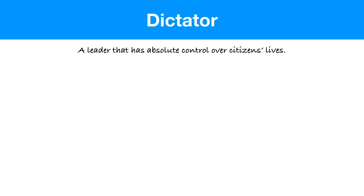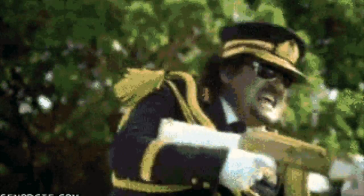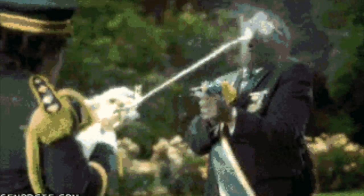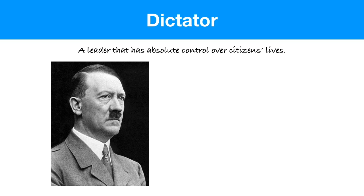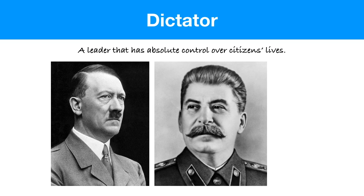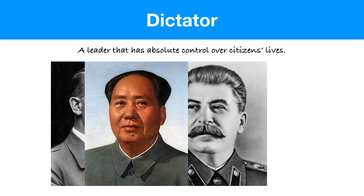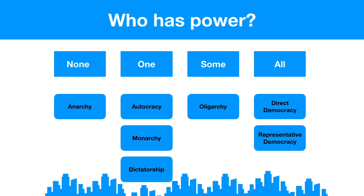The last form of government with one person in charge is the dictatorship. A dictator is an autocrat who rules by force — they take over their country's former government and start a new regime where they are the leader. If anybody doesn't like it, they're probably going to meet a gruesome end. Examples include Adolf Hitler, Joseph Stalin, Mao Zedong, and Kim Jong-un.